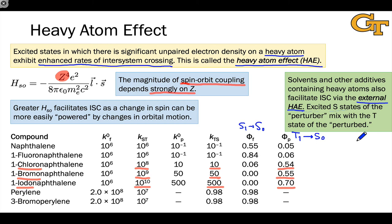There is an external heavy atom effect: incorporating heavy atoms into, say, the solvent can have the same effect of increasing the rate of intersystem crossing even though the heavy atom is not directly covalently linked to the chromophore. The idea is that as long as there is mixing of the states of the solvent containing the heavy atom with the triplet state of the perturbed molecule, there is an enhancement of intersystem crossing. Those heavy atoms in the solvent become involved in the excited state of the solute, and so the heavy atom can become involved in spin-orbit coupling within the solute.